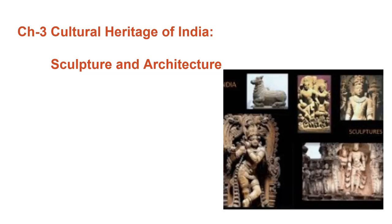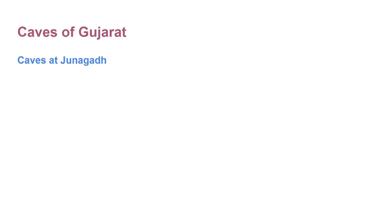Now in this video we are going to talk about caves of Gujarat. Cave architecture is considered as a main place of beauty. There are many well-known caves in India, but in this video we are going to talk about Gujarat. First of all, let's talk about caves at Junagadh. There are three groups of caves in Junagadh.